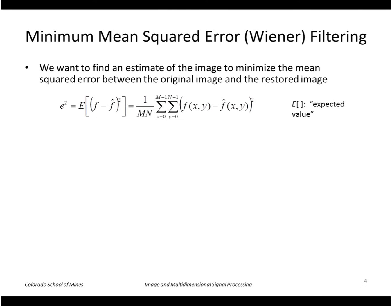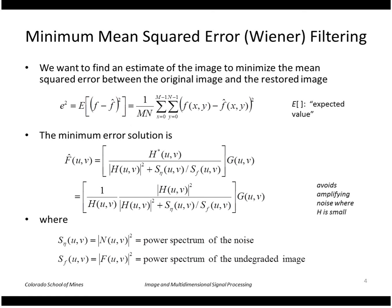We're going to look at a process called Wiener filtering, which gives us the minimum expected mean squared error between the original image and the restored image. Mathematically, it is the expected value of f minus f hat squared. The minimum error solution is given by this Wiener filter in brackets. As you can see, we're expressing this in the Fourier domain. The S sub eta is the power spectrum of the noise at a particular u and v frequency. S sub f is the power spectrum of the undegraded image at a particular u and v frequency. This avoids amplifying the noise where h is small.